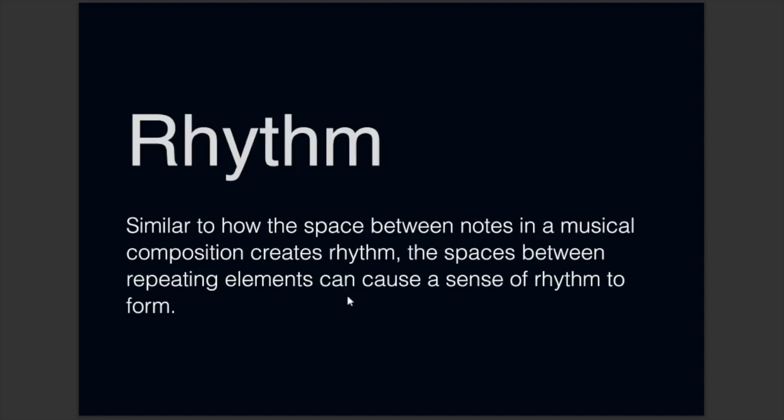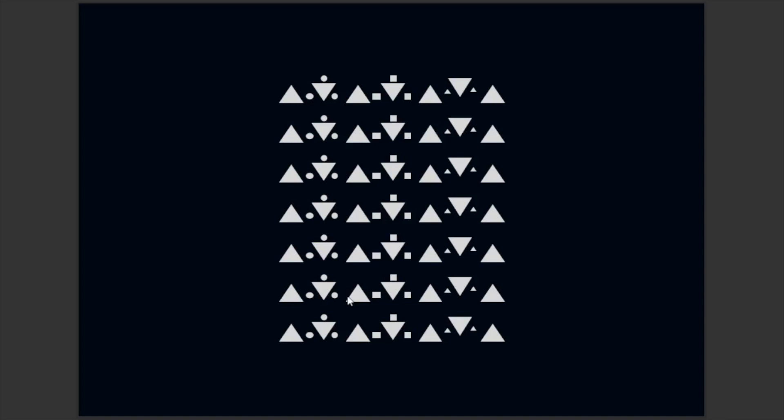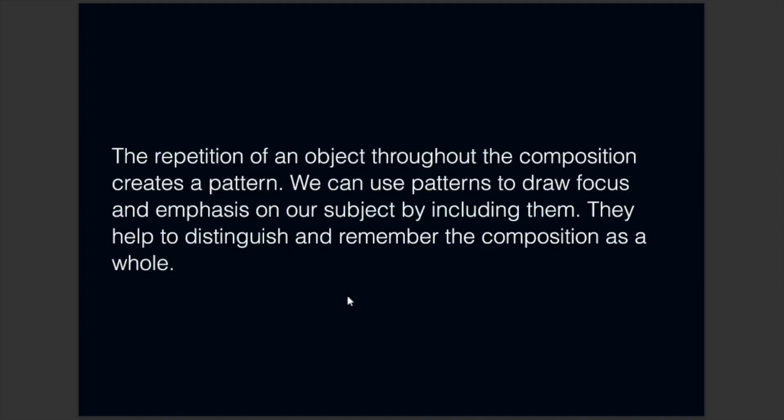Next is rhythm. Similar to how the space between notes in a musical composition works, the spaces between repeating elements can cause a sense of rhythm to form. Here is a pictorial example of what rhythm in design looks like. The repetition of an object throughout the composition creates a pattern. We can use patterns to draw focus and emphasis on our subject by including them. They help to distinguish and remember the composition as a whole.